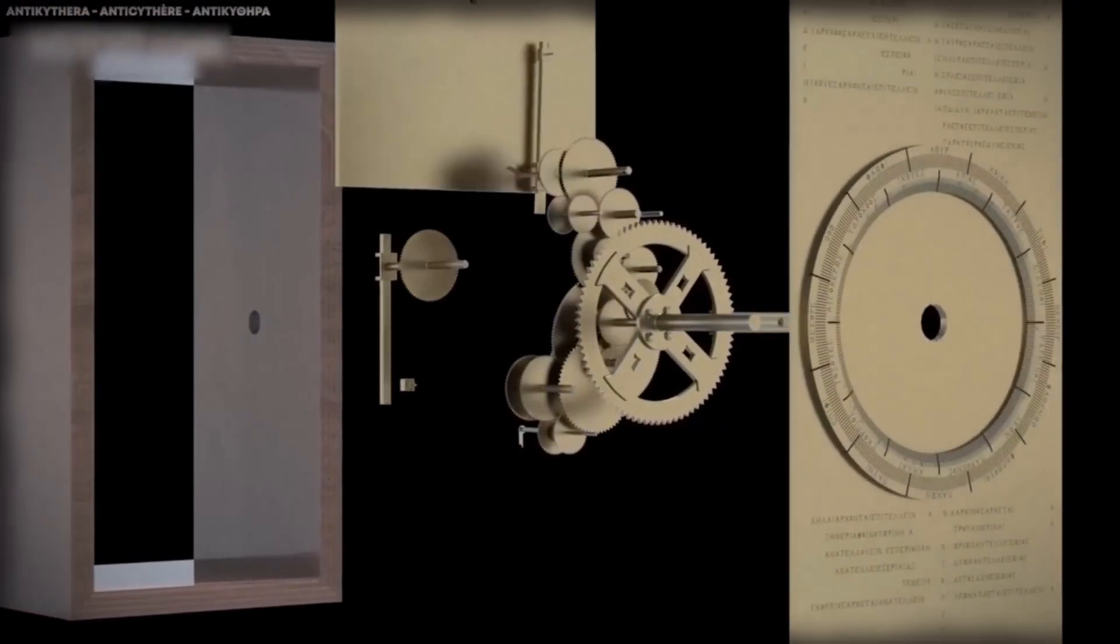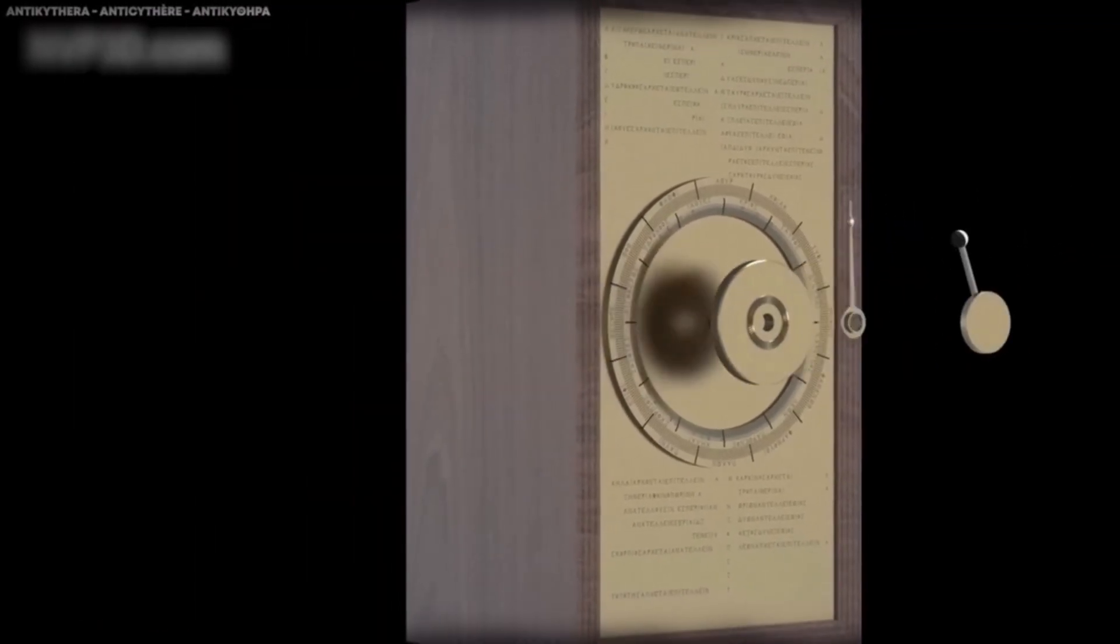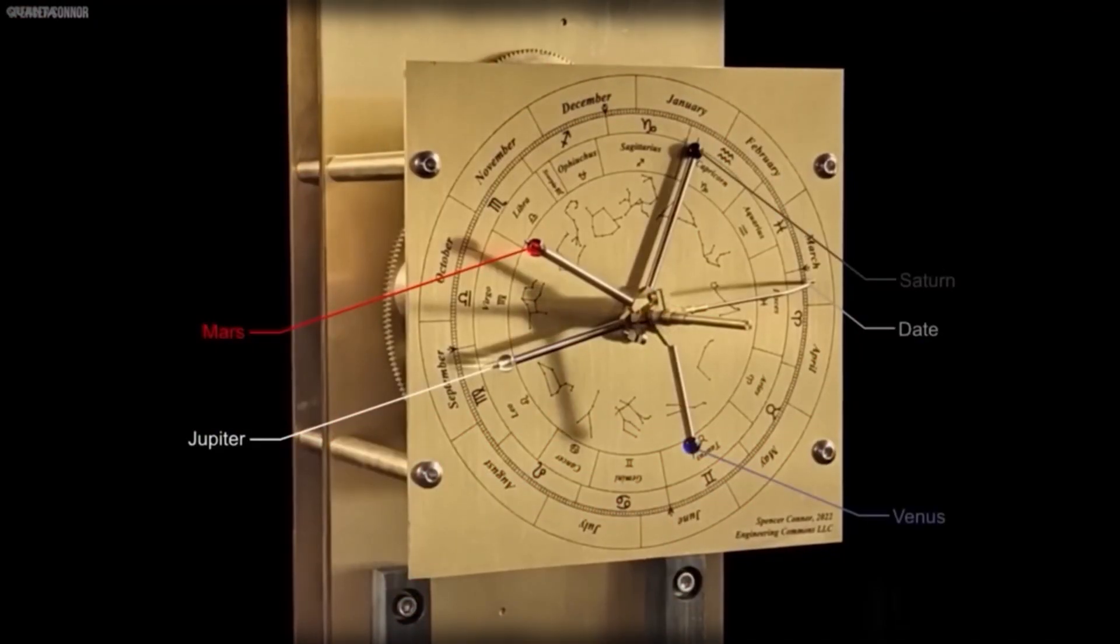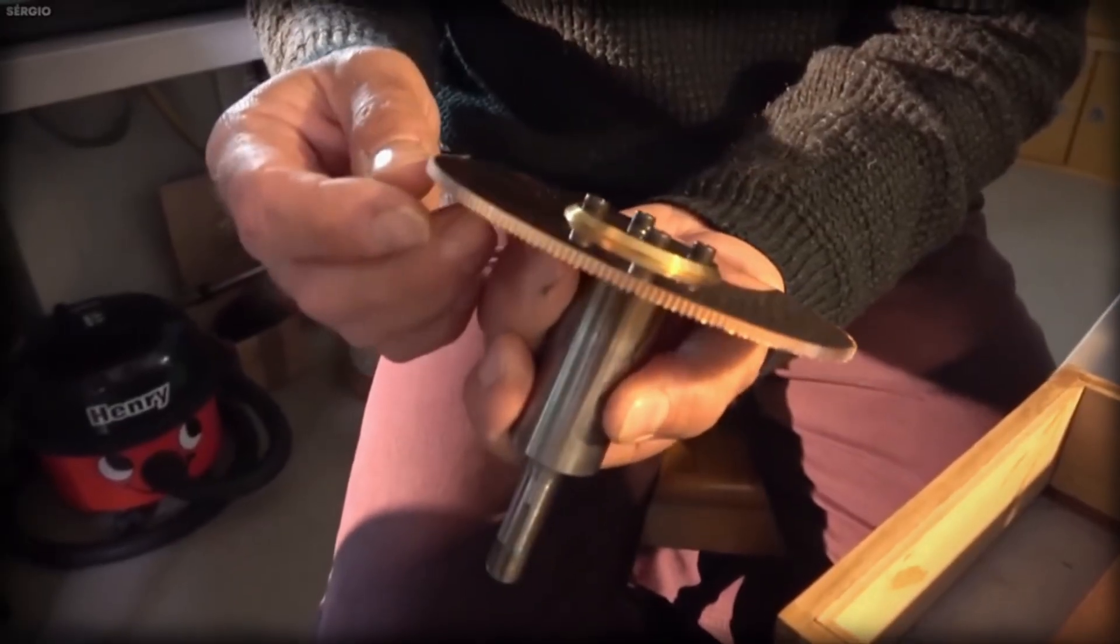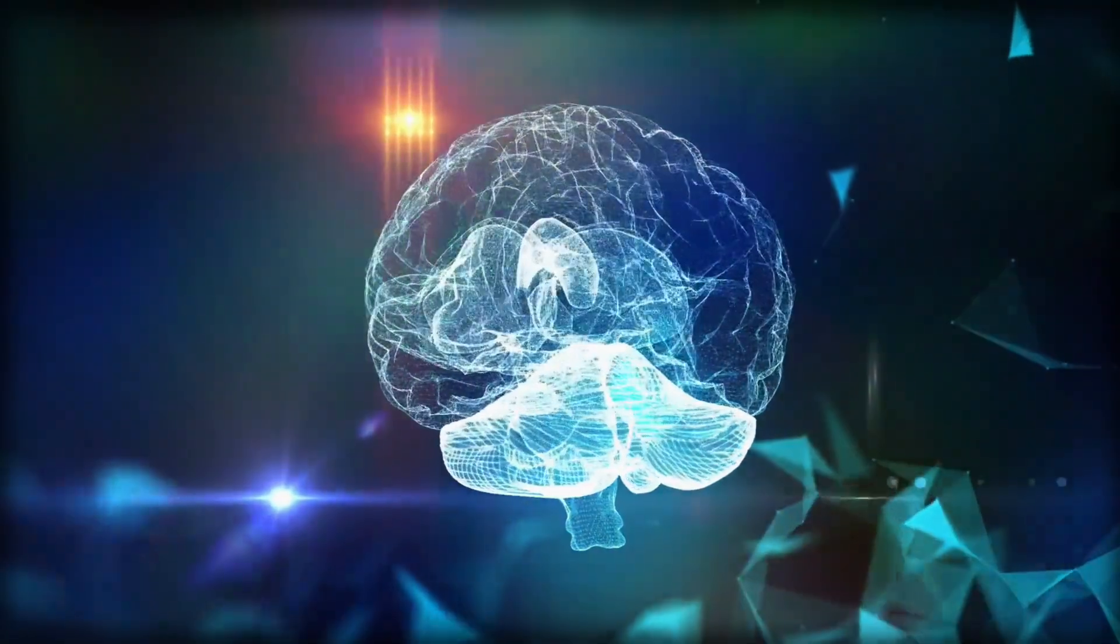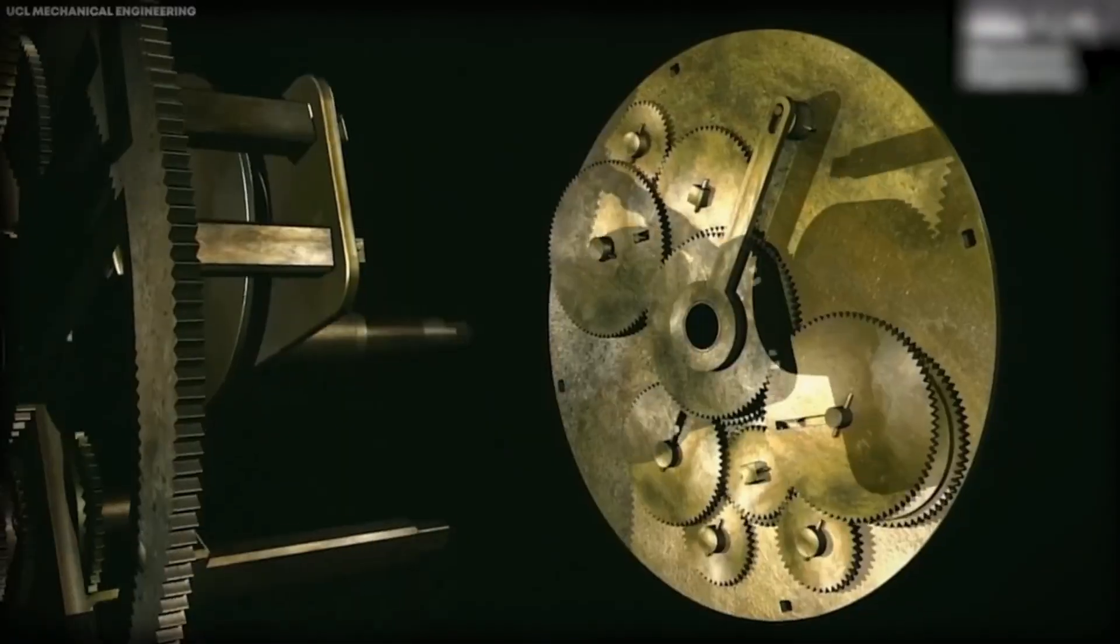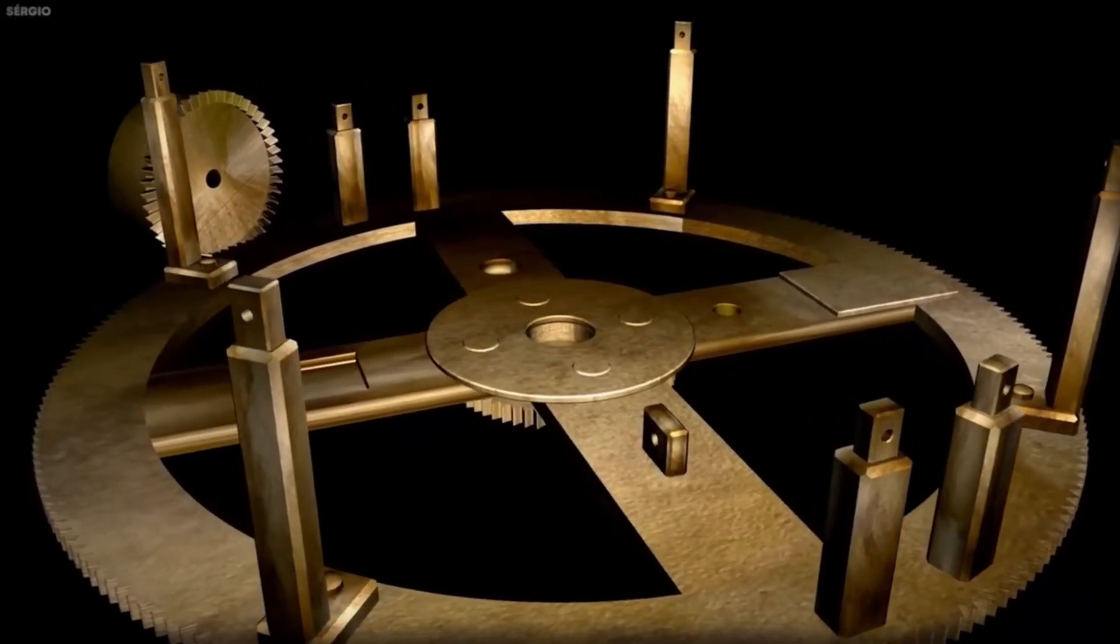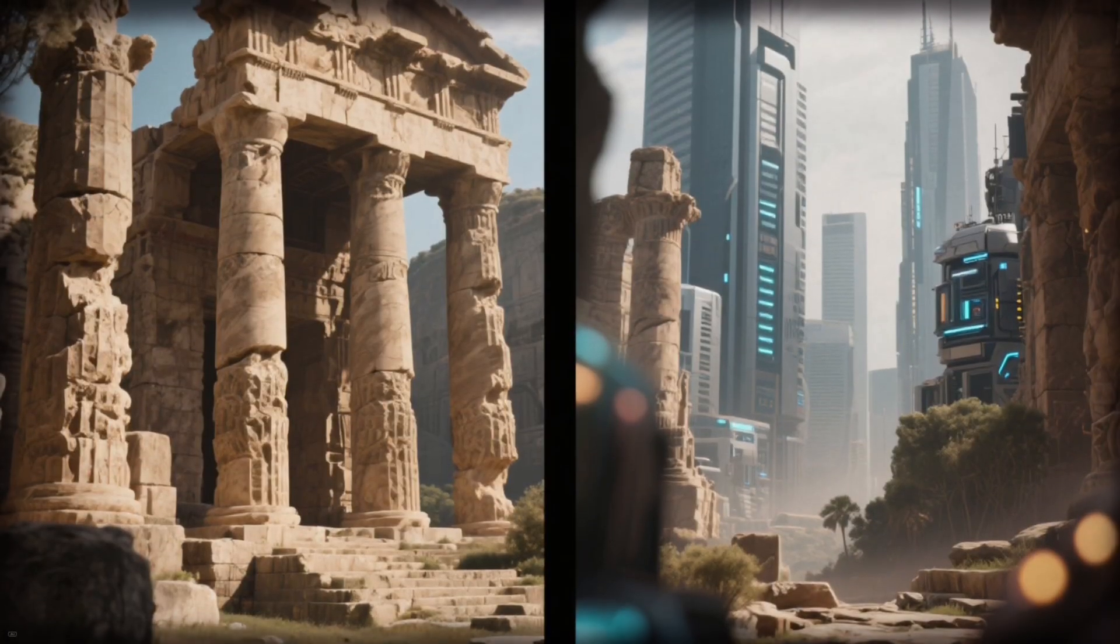When modern engineers reconstructed it and saw all nine celestial markers moving together, the moon, the planets, the sun and the calendar, they realized they weren't just looking at a machine. They were looking at the mind of its maker, someone who had captured the rhythm of the universe inside a handful of bronze gears. And that revelation would forever change what we thought we knew about the ancient world.